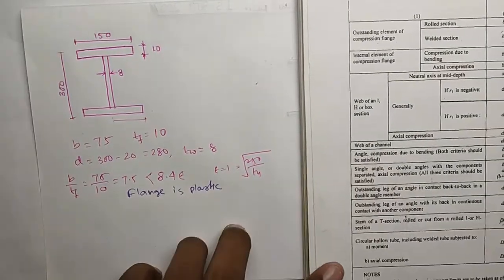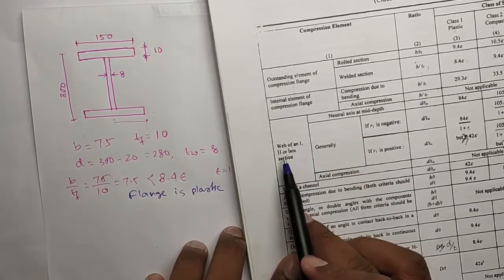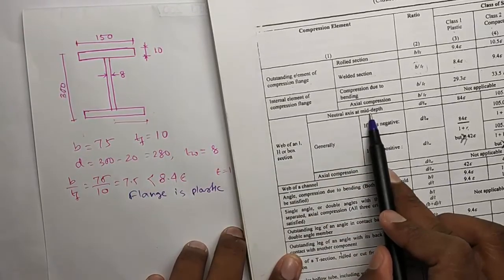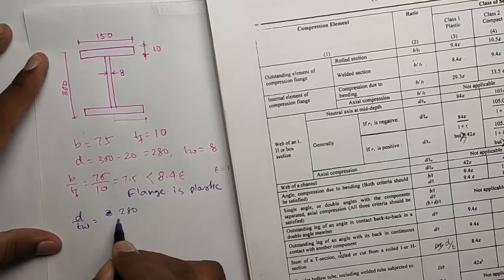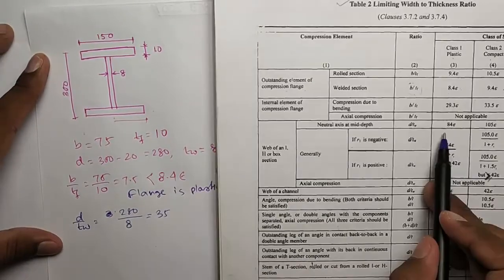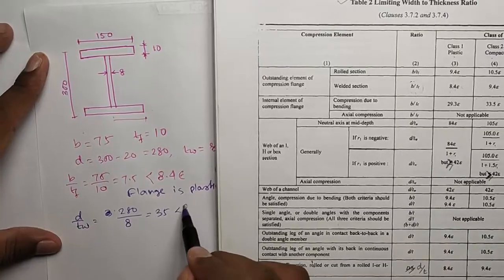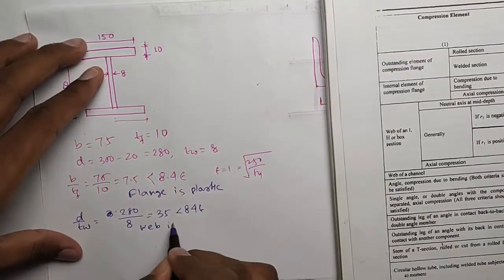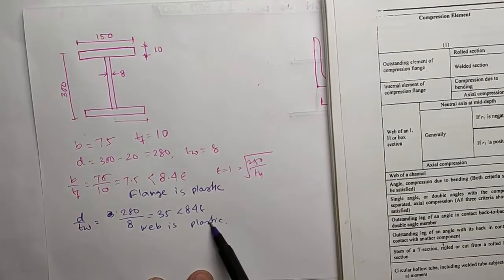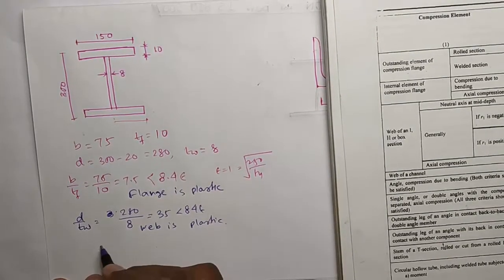Now for web. In table 2 for web, you see this web. Neutral axis has mid depth, D by TW. D by TW is 36 by 8, which is 4.5. See, this is less than 84 epsilon, so the web is plastic.